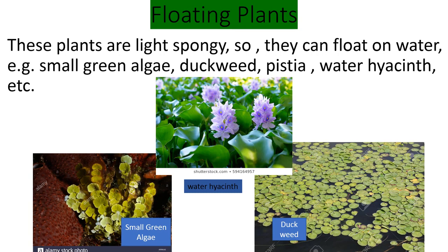Floating plants: these plants are light and spongy, so they can float on water. Examples include small green algae, duckweed, Pistia, and water hyacinth. This slide shows small green algae, water hyacinth, and duckweed — these are floating plants.